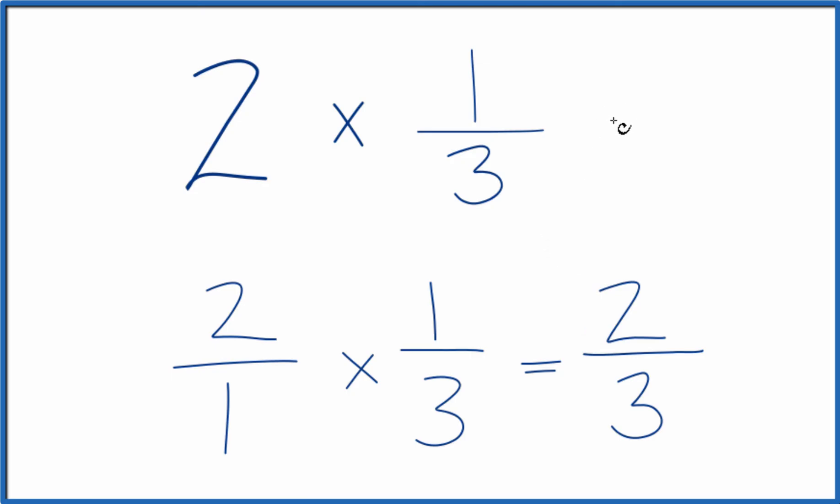So in answer to our question, when we multiply two times one-third, we get two-thirds.